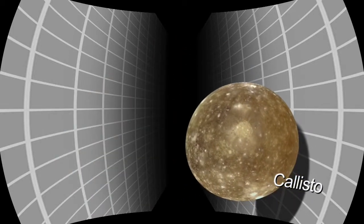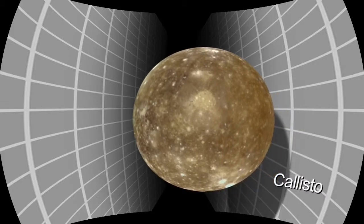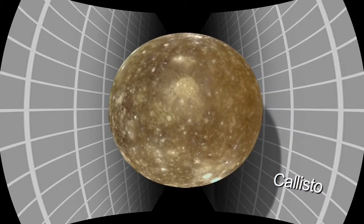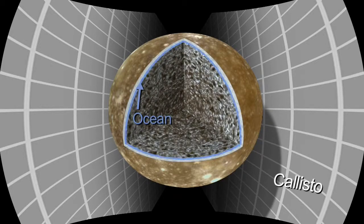Callisto, the relatively dead world, has not the level of activity that Europa and Ganymede have. Yet we think that Callisto has an ocean beneath its surface.